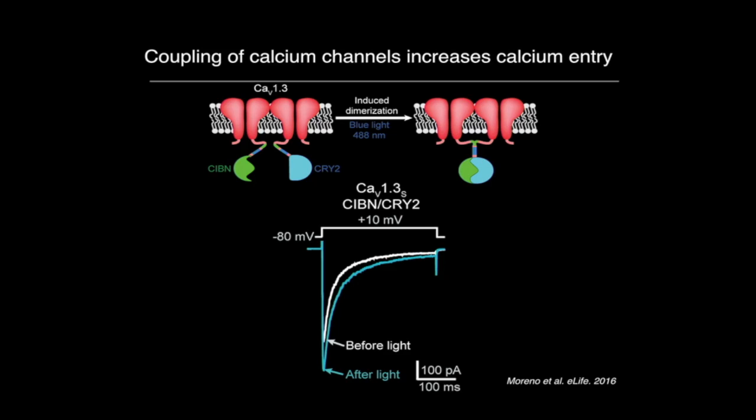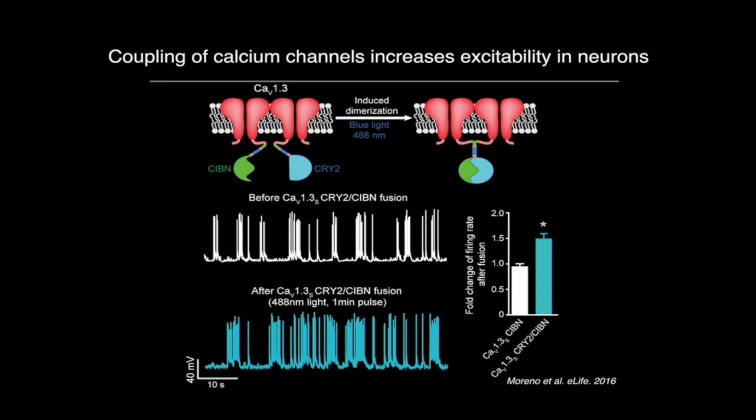Physiologically this has different effects we have evaluated in different cells. In hippocampal neurons, getting more calcium in results in an increase in the firing rate. Using the cryptochrome system in hippocampal neurons, you can see the cell firing spontaneously action potentials, and after illuminating with blue light to force the channels to interact, there is a significant increase in the firing rate.